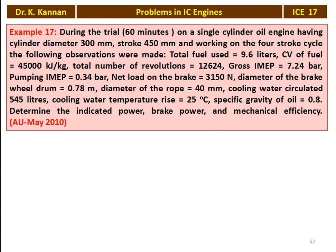We take example number 17 from the May 2010 question paper. During a trial of 60 minutes on a single cylinder oil engine having cylinder diameter 300 millimeters, stroke length 450 millimeter, working on 4-stroke cycle, the following observations were made: total fuel used 9.6 liters, calorific value 45,000 kilojoules per kilogram, total number of revolutions 12,624, gross indicated mean effective pressure 7.24 bar, pumping indicated mean effective pressure 0.34 bar, net load on the brake 3150 Newton.